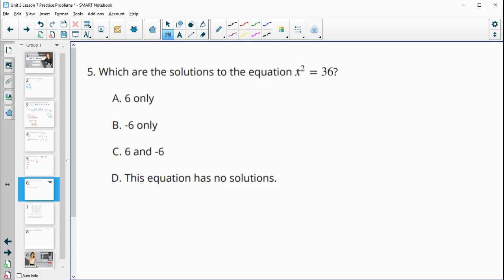Number 5, which are the solutions to this equation? So remember that we've got two solutions here when we put the square root in. So we get x equals the plus or minus square root of 6 because 6 times 6 equals 36. And negative 6 times negative 6 also equals positive 36. So 6 and negative 6 work.